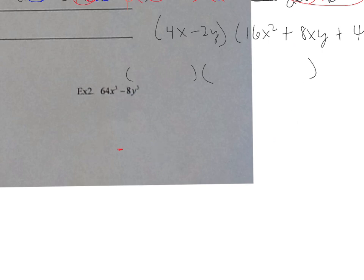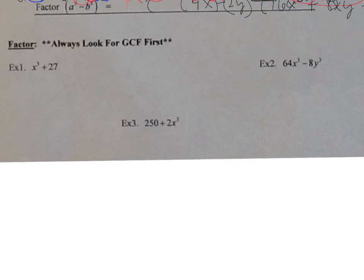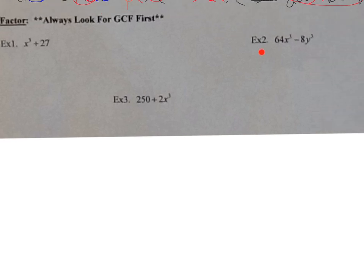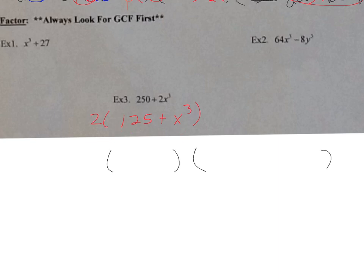Let's try the last one. When you factor, you always look for the GCF first — I didn't emphasize that before, but here you have to. The GCF is 2, so factor out the 2 to get 2(125+x³). Inside we have the sum of perfect cubes. Set up parentheses: first sign same (plus), next opposite (minus), last always positive. Cube root of 125 is 5; cube root of x³ is x.